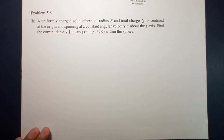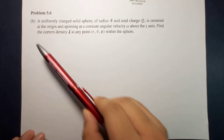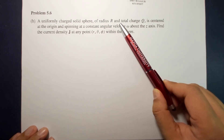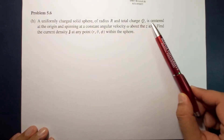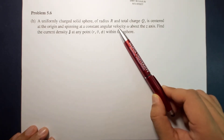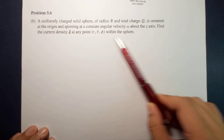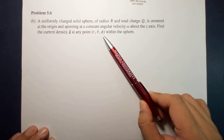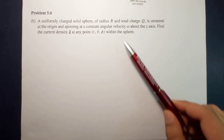What's up guys, it's me Sir Earnest, and today we will solve a problem involving current density due to a uniformly charged solid sphere. The problem reads: a uniformly charged solid sphere of radius R and total charge Q is centered at the origin and spinning at a constant angular velocity omega about the z-axis. Find the current density J at any point r, theta, and phi within the sphere.